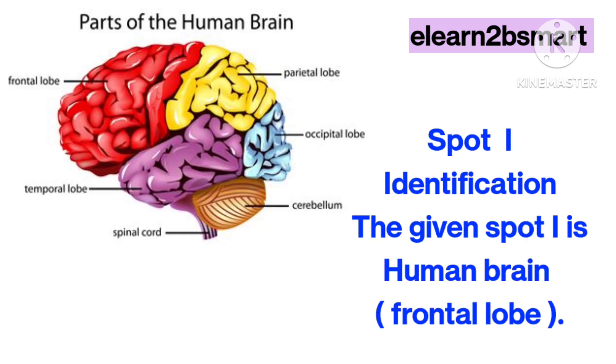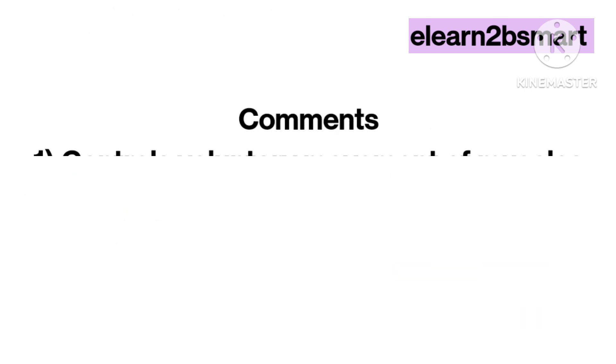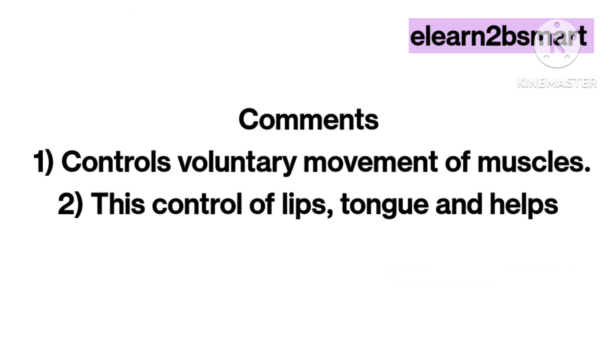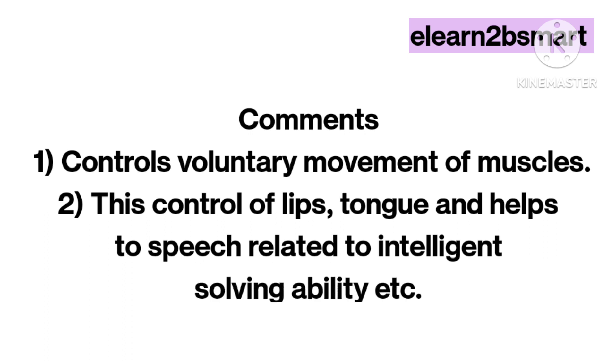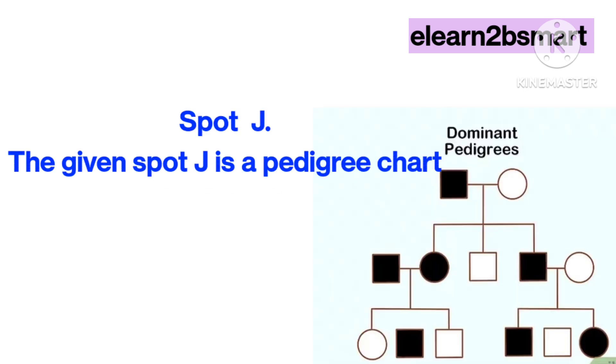Spot I identification: The given spot I is the human brain frontal lobe. Comments: 1. It controls voluntary movement of muscles. 2. It controls lips and tongue, helps with speech, and is related to intelligence and problem-solving ability.